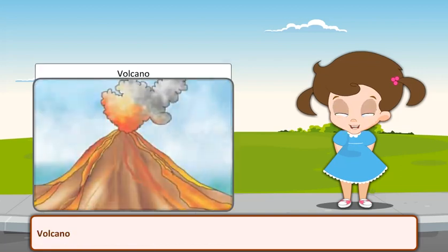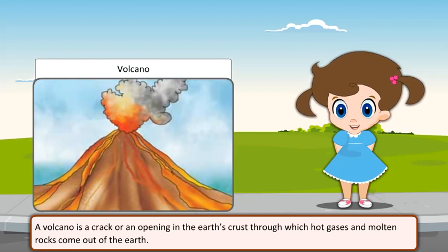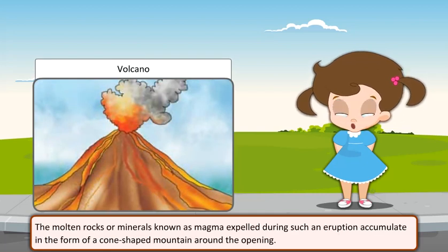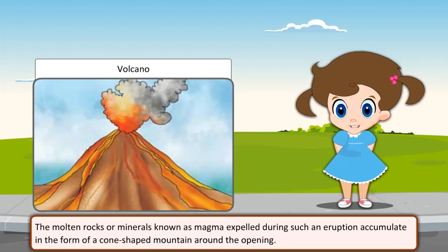A volcano is a crack or an opening in the earth's crust through which hot gases and molten rocks come out of the earth. The molten rocks or minerals, known as magma, expelled during such an eruption, accumulate in the form of a cone-shaped mountain around the opening.